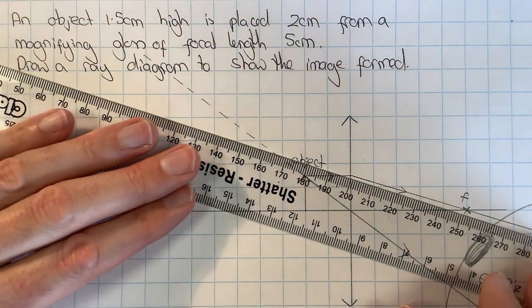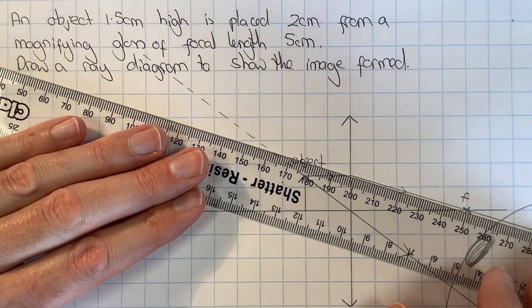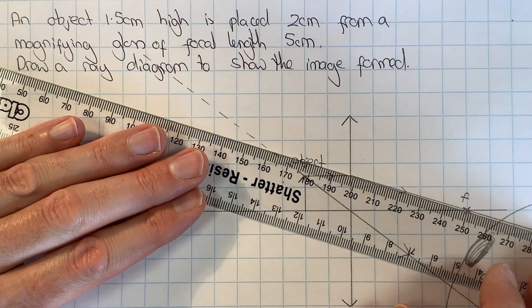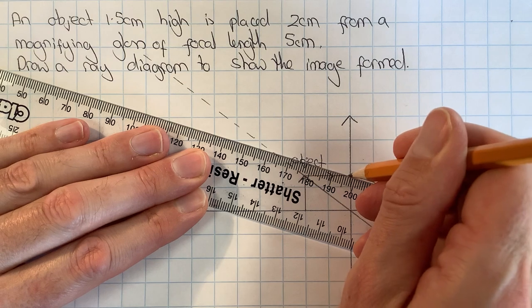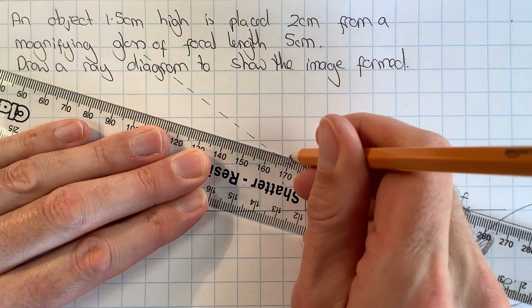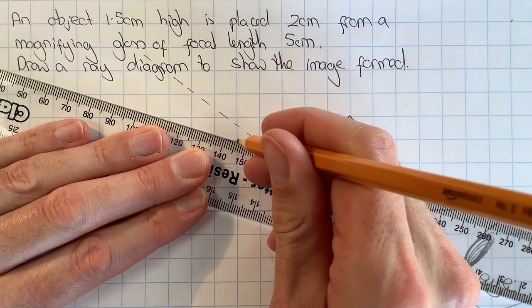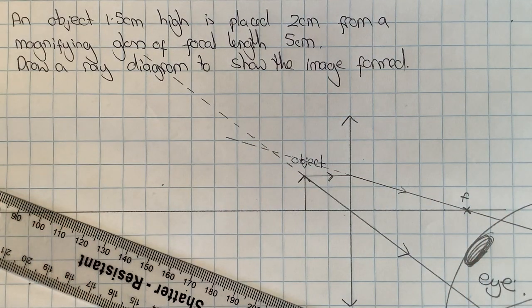Then I do the same thing: line up the ruler with this real ray after it has gone through the lens, and then I add in my dotted virtual ray going backwards. Where those rays cross is where the tip of the arrowhead of the image is going to be formed.